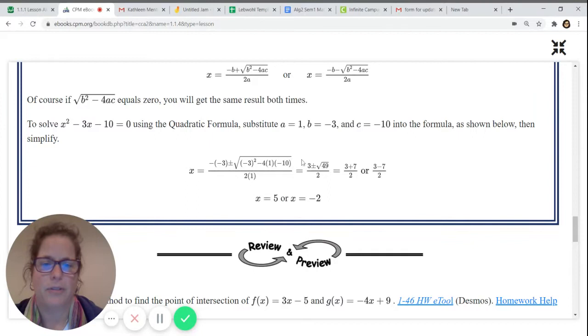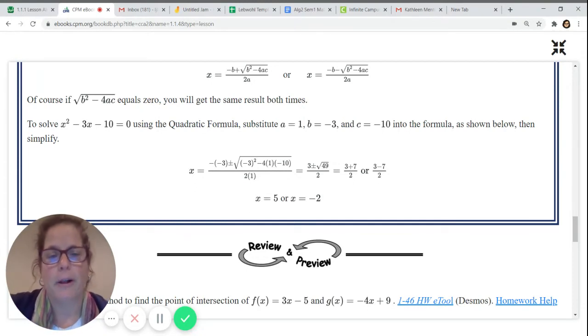And so here we plug all of those values in. You have to start with the opposite of b. Well, the opposite of negative 3 simplifies to a positive 3. You put all of these values under the radical, and when you simplify, you get a positive 49. Do be careful, because when you start with this b squared, a negative squared gives you a positive. If you're using your calculator to do any calculations with negatives, be sure you put it in parentheses so that your calculator does it correctly.